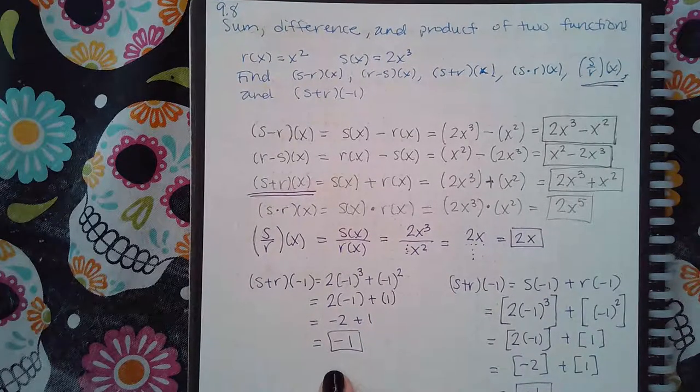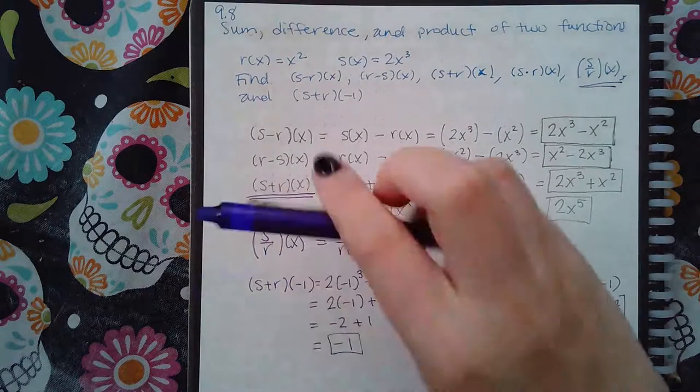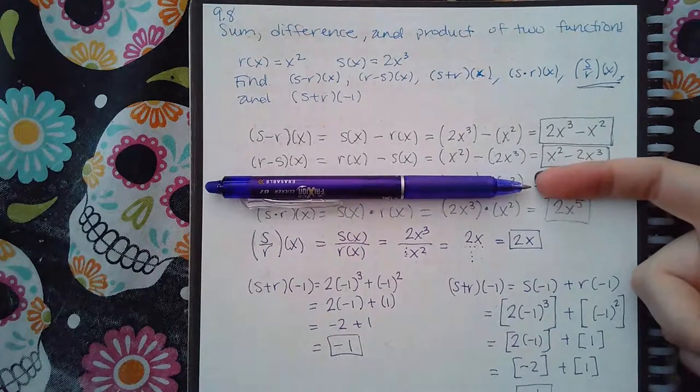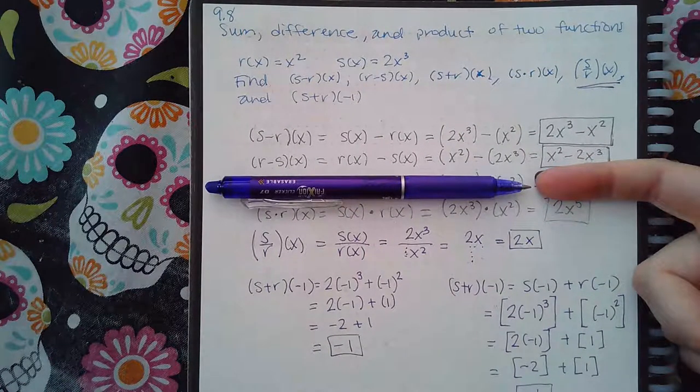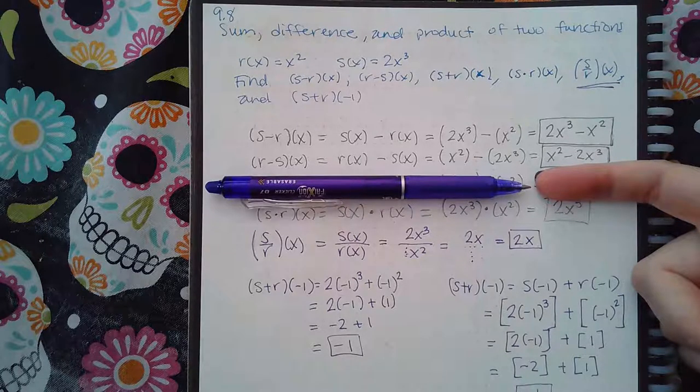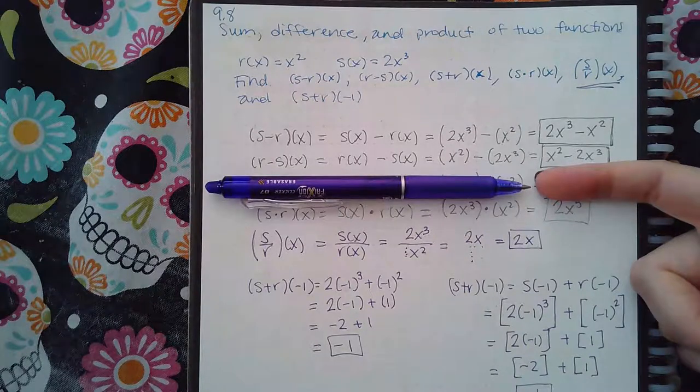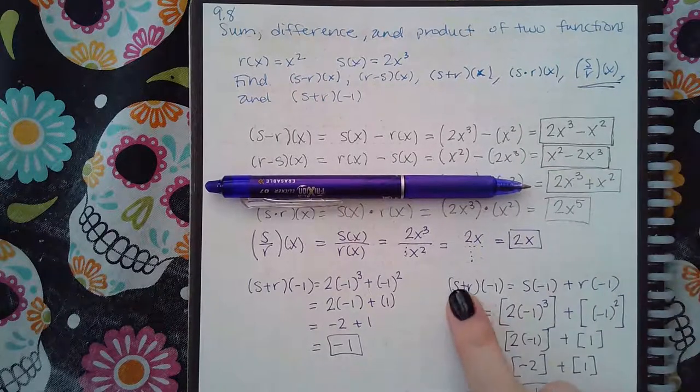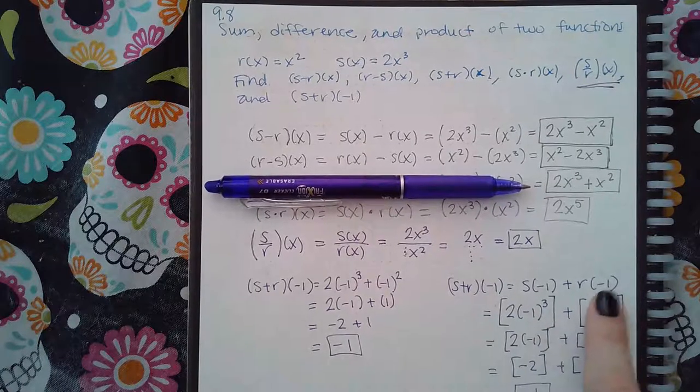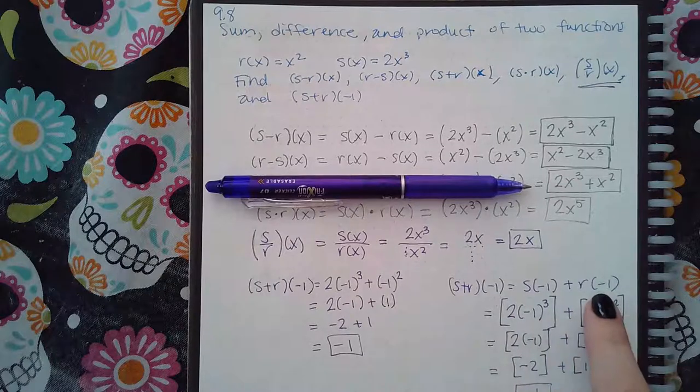However, if you had not done this - so pretend that was not one of the ones that they asked me to find - if I'm still asked to do (s + r)(-1) and I had never done (s + r)(x), I can still find that value. All I have to do is separate this to s(-1) plus r(-1), and then plug negative 1 into the s function, plug negative 1 into the r function, compute those two values, and then add their results together.